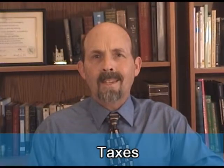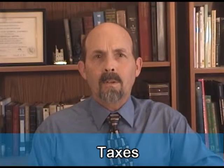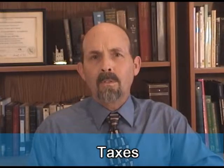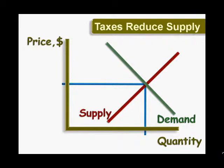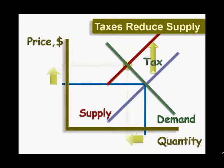In addition to raising revenue, we often impose taxes to discourage something that we don't like or want people to consume less of. A tax effectively raises the cost of something. A tax on the sale or production of something raises a supply curve, moving market equilibrium up along the demand curve to a point where the price is higher and less is produced and consumed.